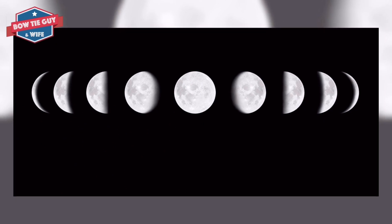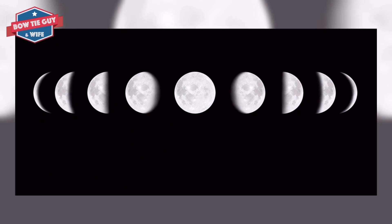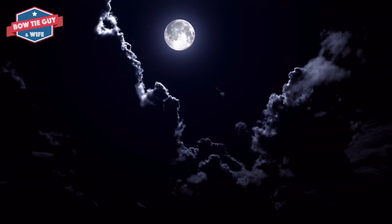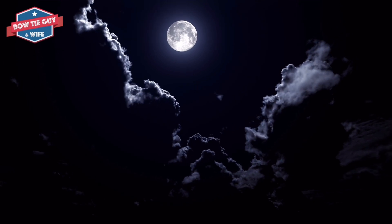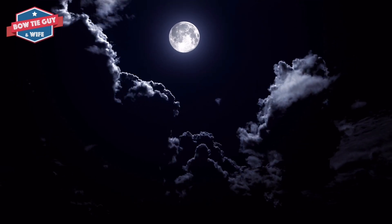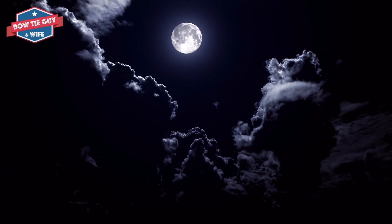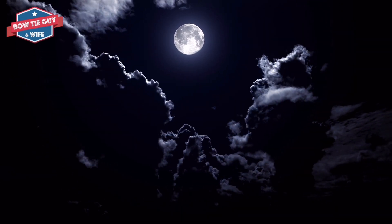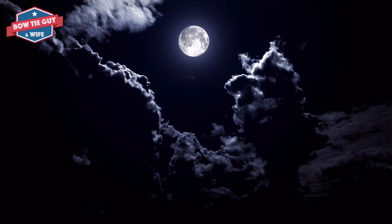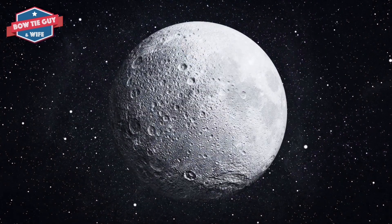One side of the moon faces Earth all the time. The moon shines and has light, but doesn't make the light. Moonlight is actually sunlight.